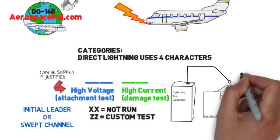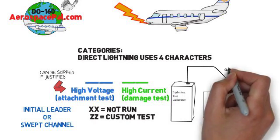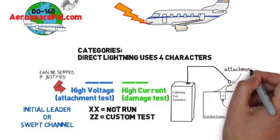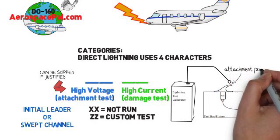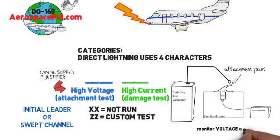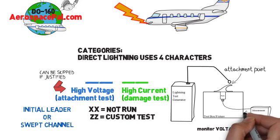The high current setup will look something similar to this, with your attachment point determined by your high voltage test if run. Your test plan should call out whether you're monitoring voltage or current on the pins of your EUT. Typically voltage is monitored unless it's locally grounded to the aircraft structure, in which case current should be monitored.